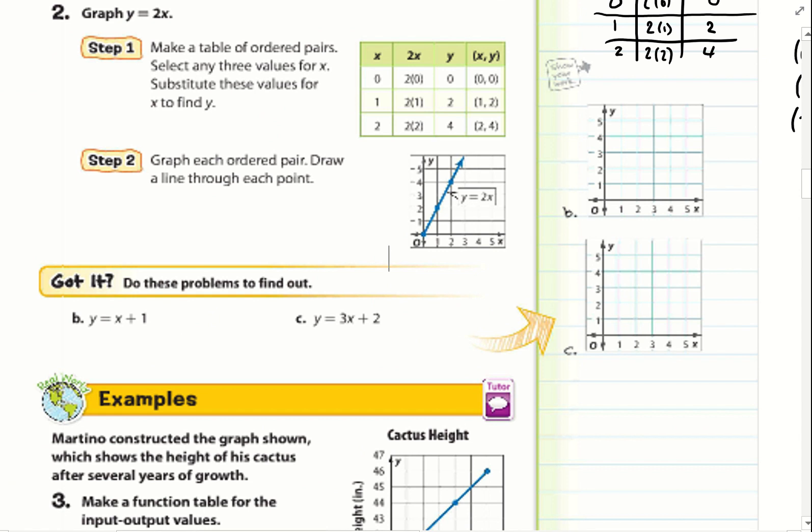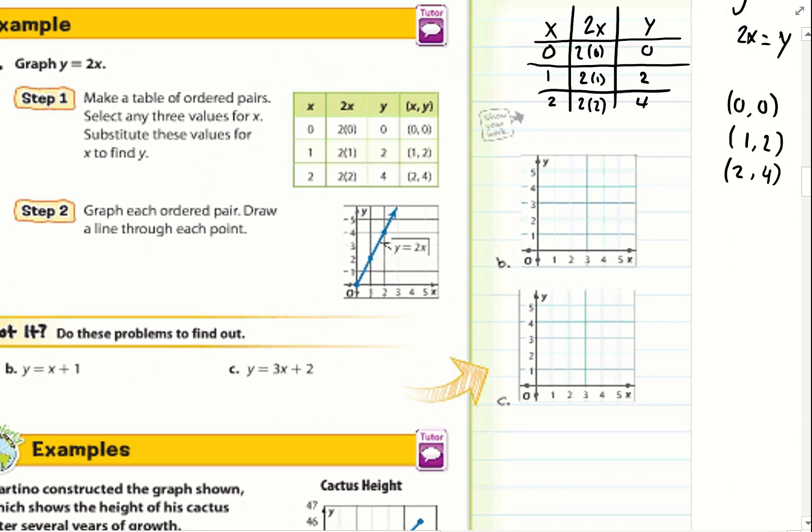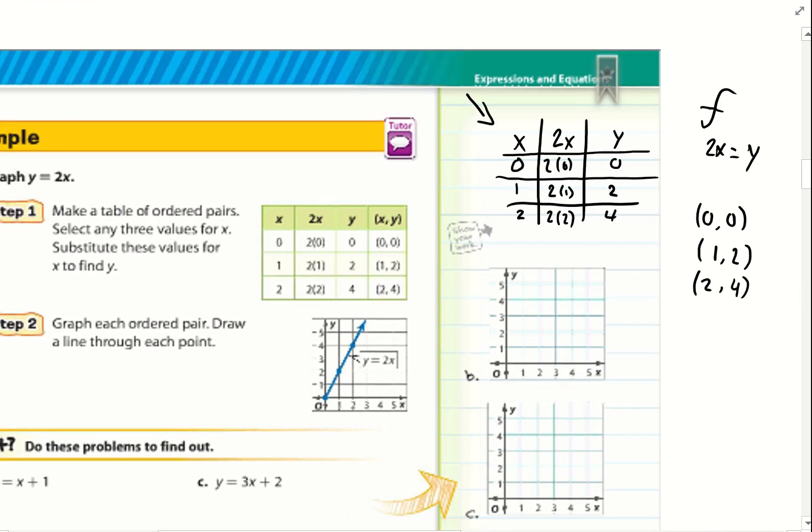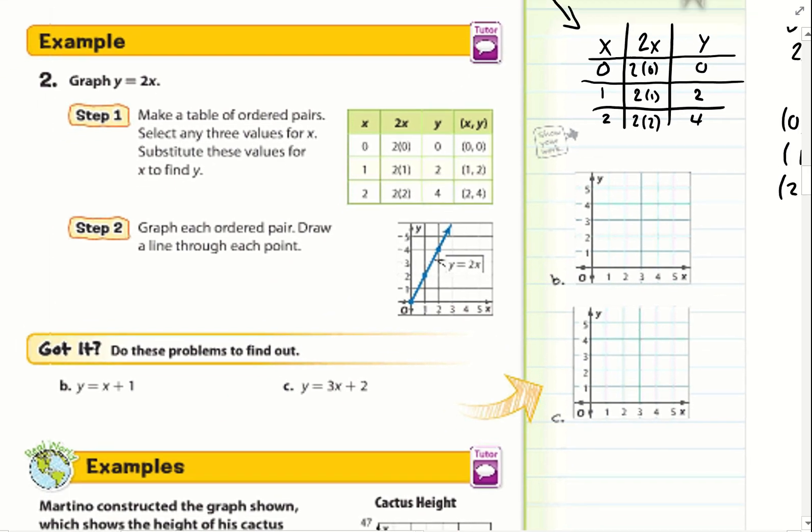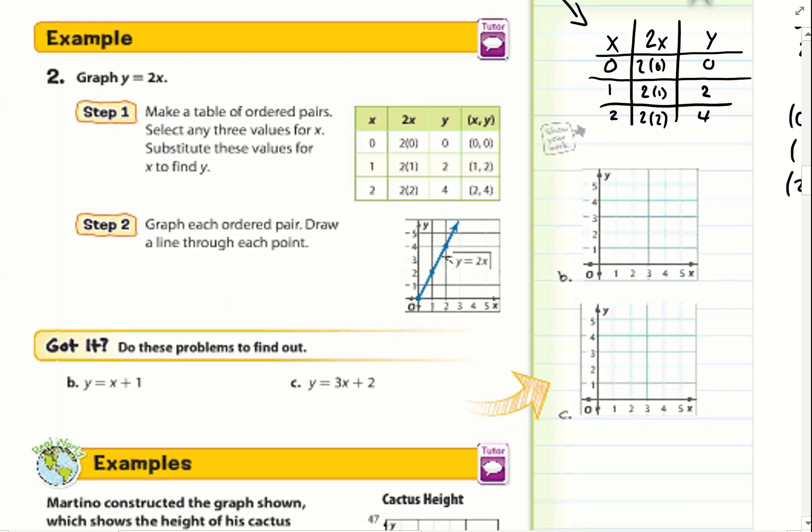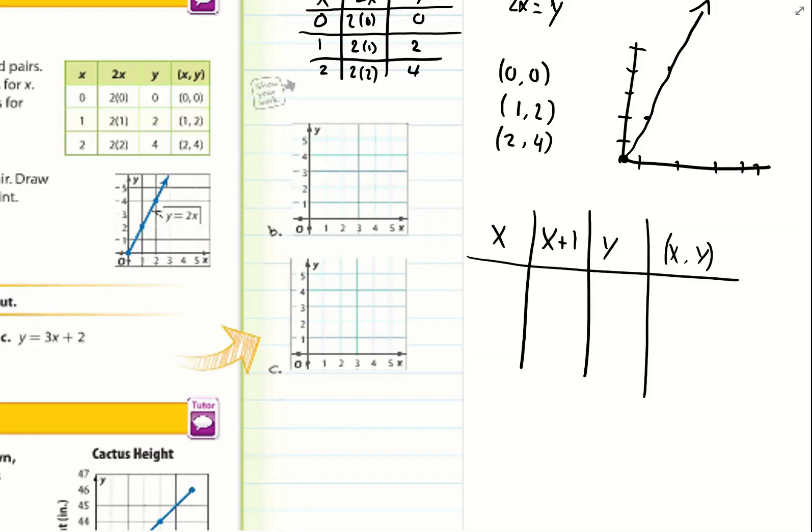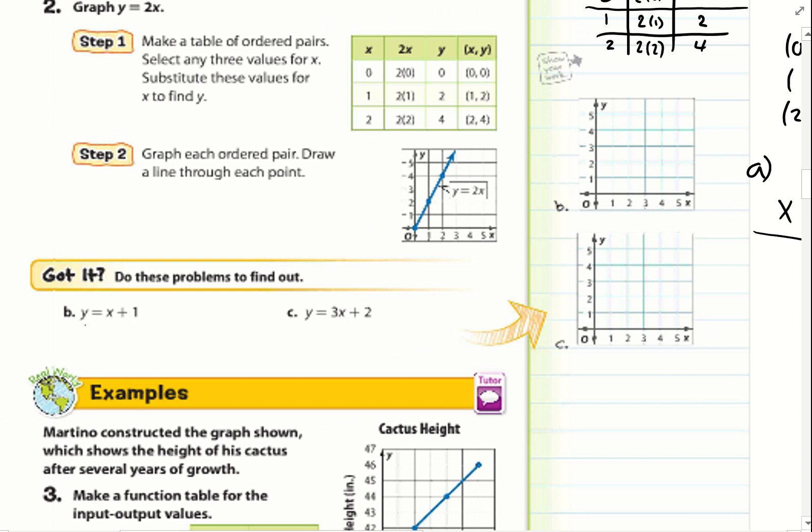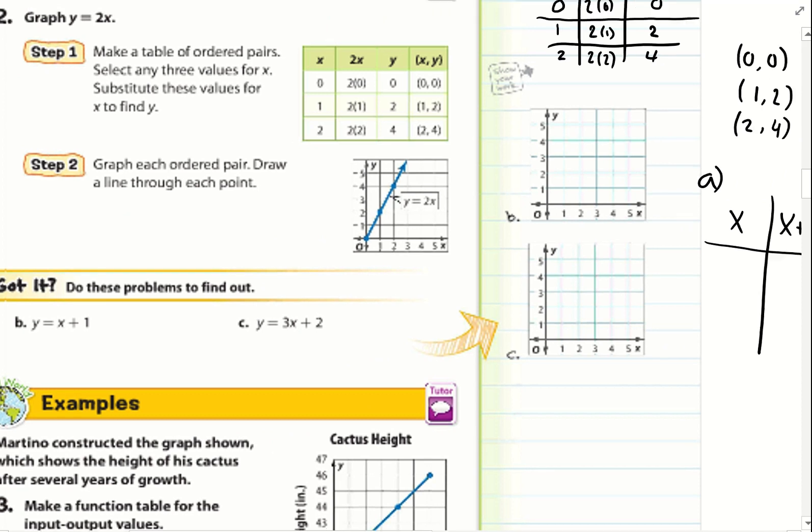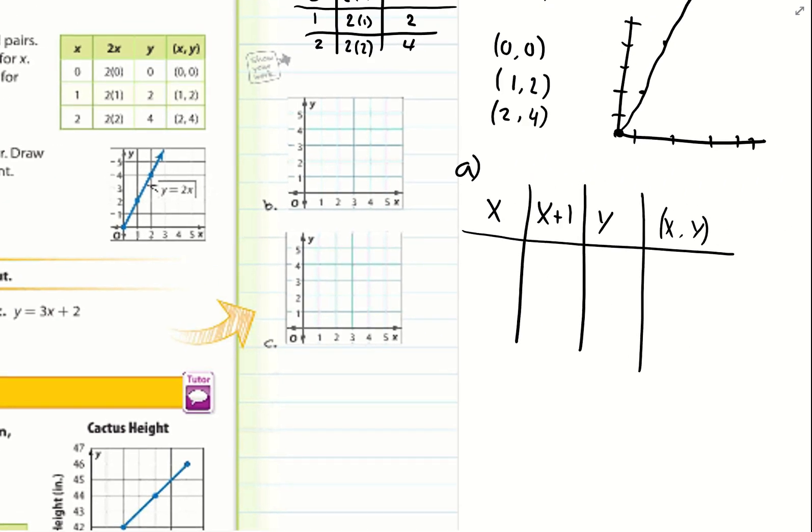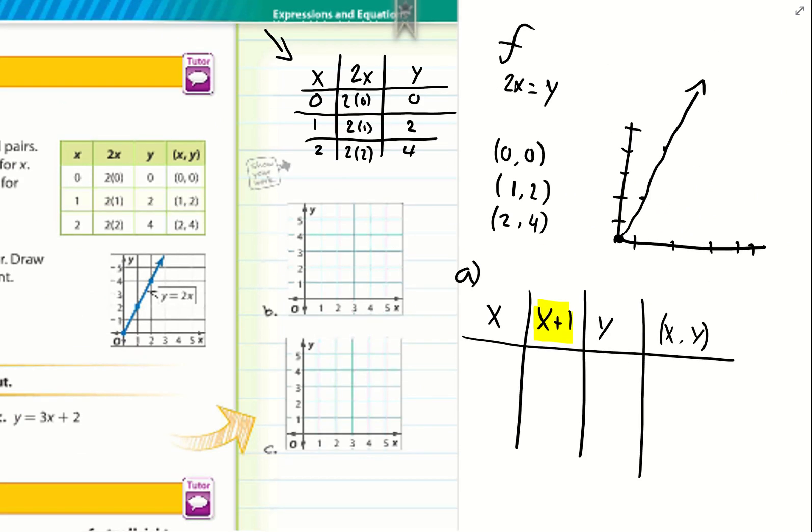Go ahead and try b and c. Remember, create a function table, just like I did above. That should be able to give you your ordered pairs, and you'd be able to graph these. So pause the video. I'm going to go ahead and do b with you guys. We have y equals x plus 1. So I have my function here, x plus 1. I'm going to use the same three numbers as I did before, 0, 1, and 2.